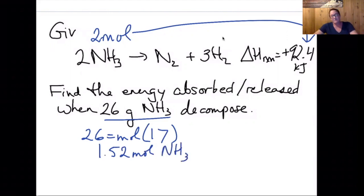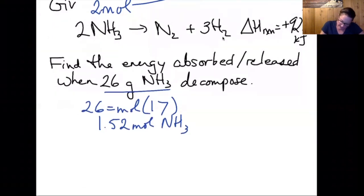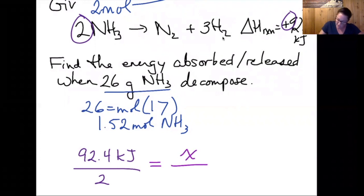I solve this problem by setting up a ratio. I know that 92.4 kilojoules are absorbed when we have two moles of NH3. I want to find out how much energy is released when we have 1.52 moles instead.